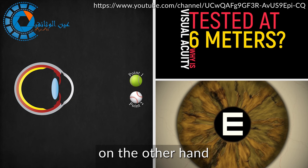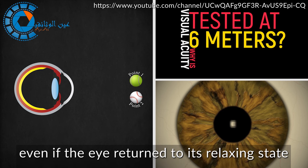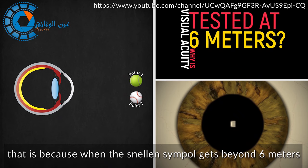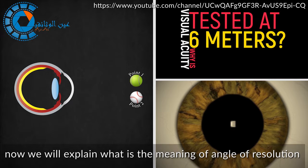On the other hand, when the symbol gets farther than 6 meters, the eye gets blurred vision too, even if the eye returns to its relaxing state. That is because when Snellen symbol gets beyond 6 meters, the angle of resolution becomes less than its minimum value: 1 minute of arc.